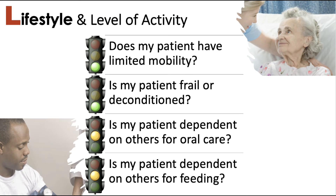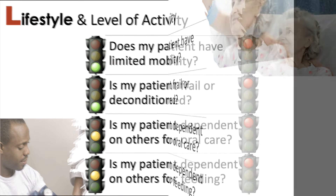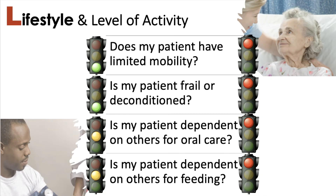Next, level of activity and lifestyle. Our gentleman was premorbidly healthy. He's improving his mobility post-TBI and working with physical therapy. He's not frail or deconditioned, so he should have a good host response. He is dependent on others for oral care right now, but again, good support system, and we can do some really good family training for feeding. Unlike our gentleman, where most lifestyle aspects were modifiable, our elderly lady is less modifiable. She has limited mobility, has been non-ambulatory for a while, is deconditioned and frail, and is dependent on others for both oral care and feeding assistance.